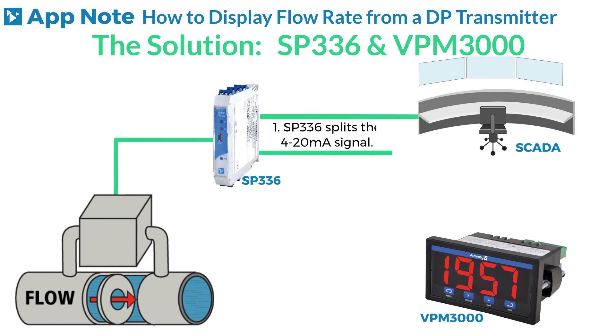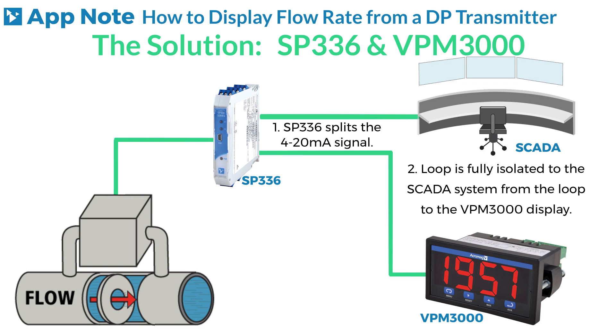The SP336 is used to split the 4 to 20 milliamp signal, which will fully isolate the loop to the SCADA system from the loop to the display.